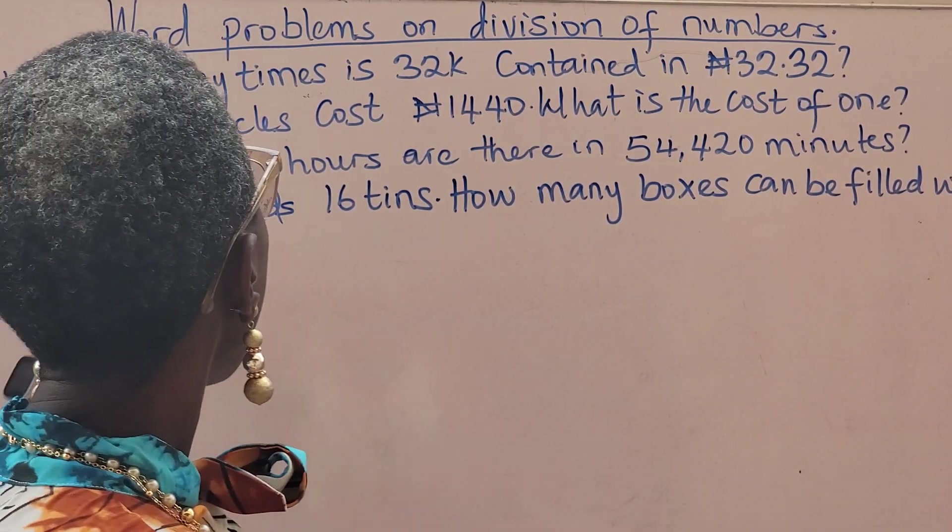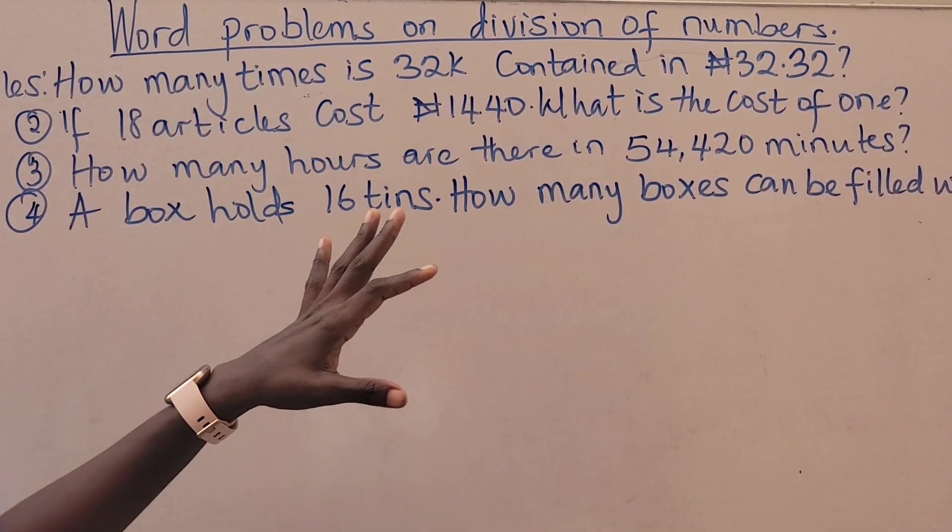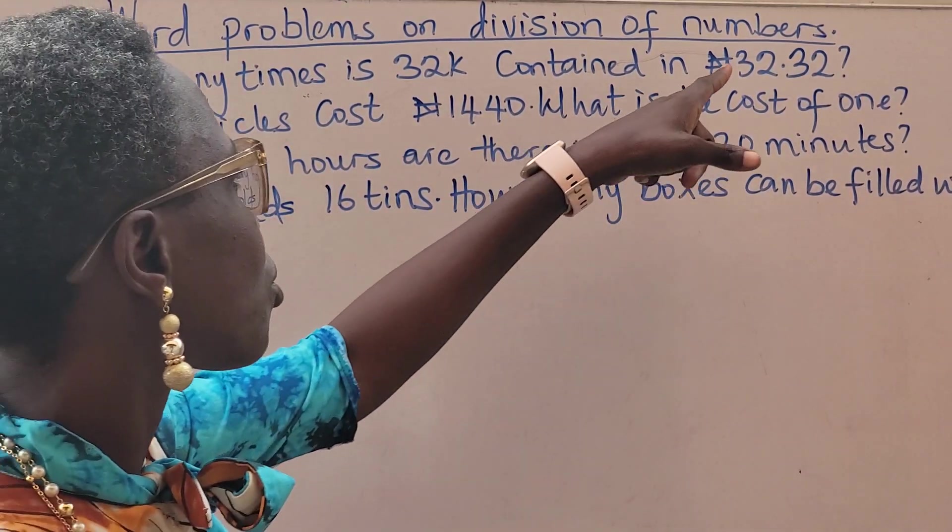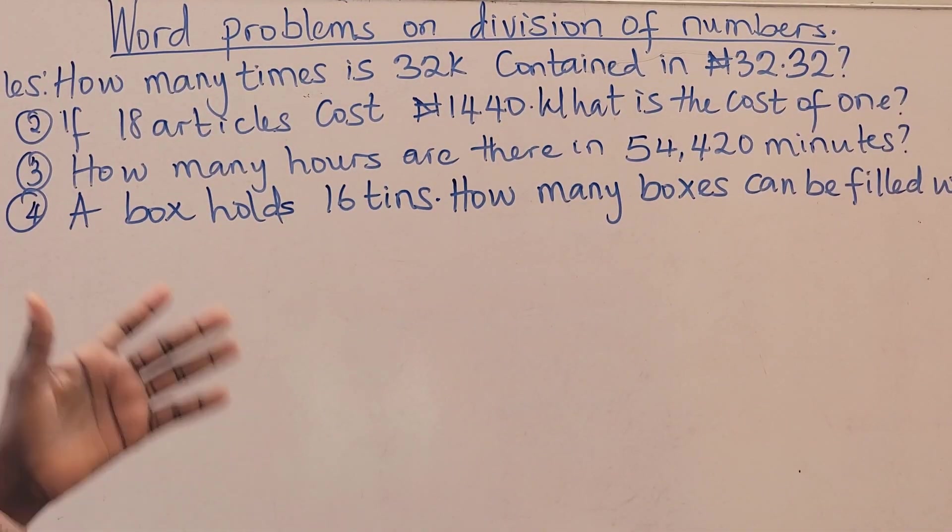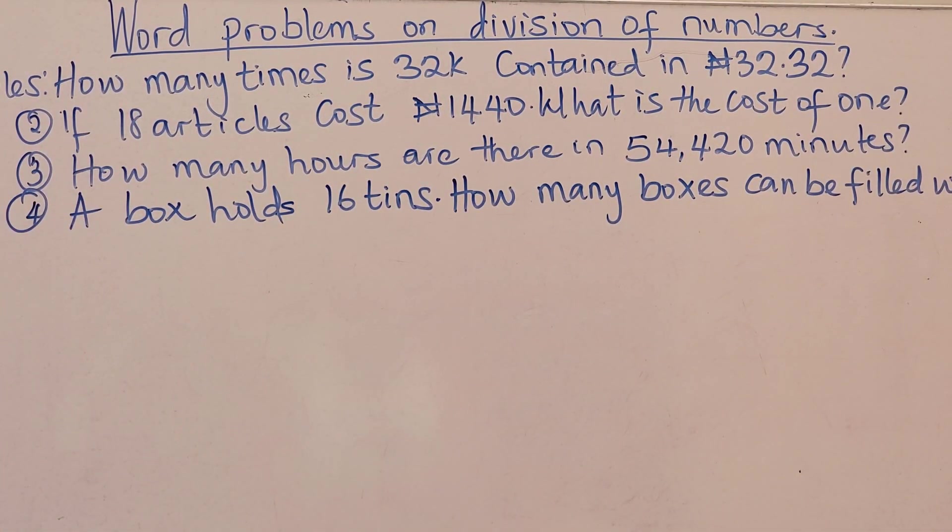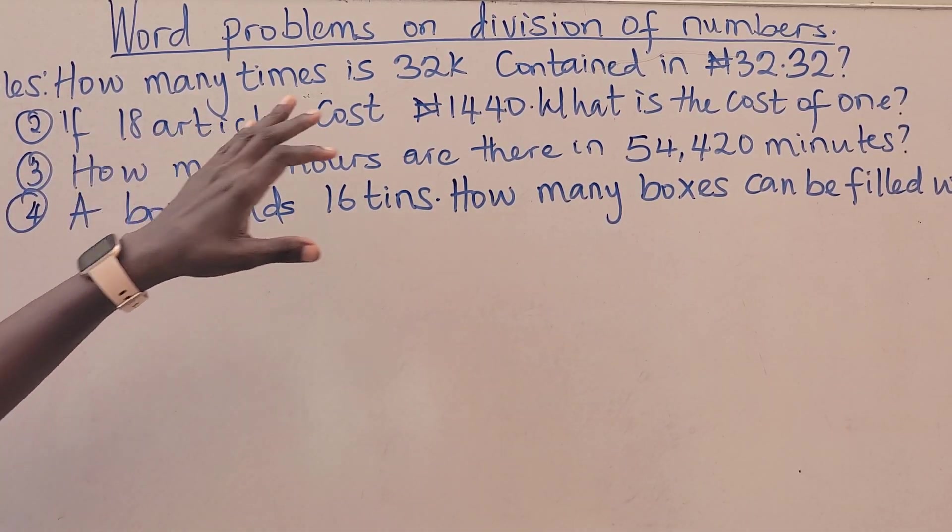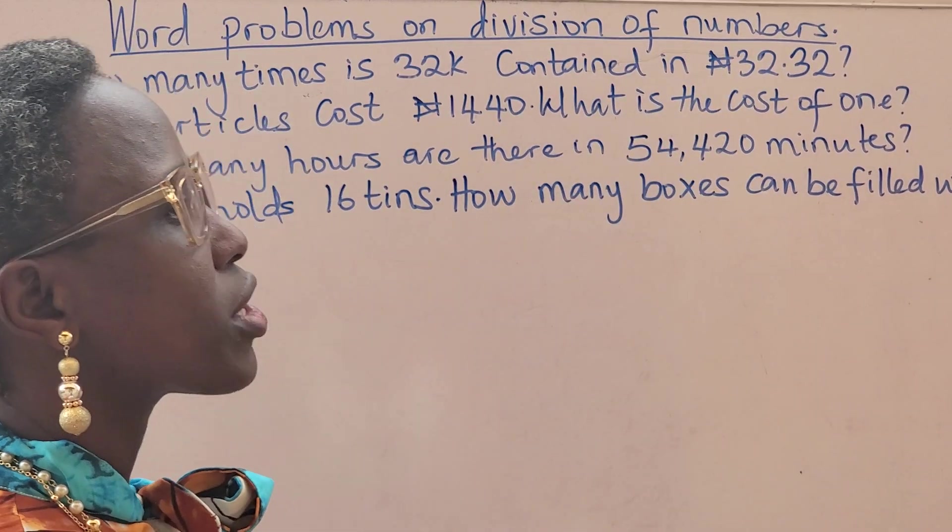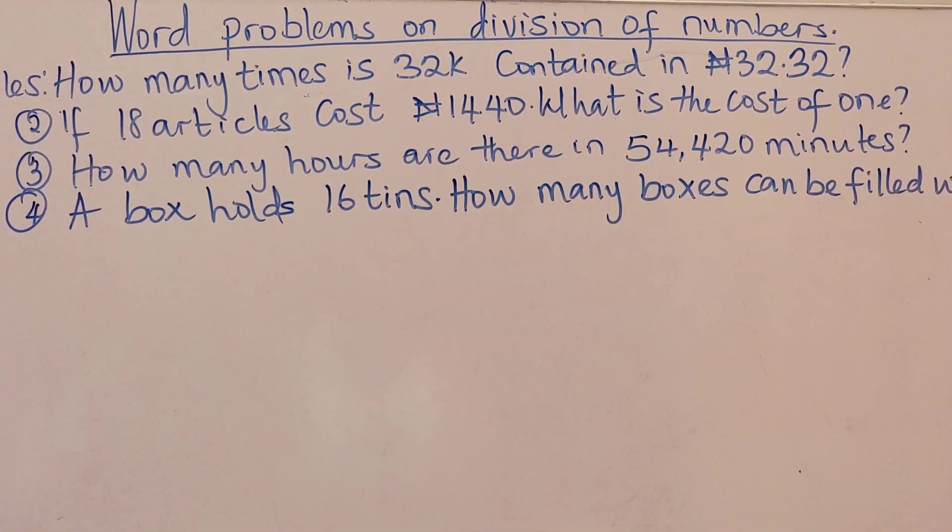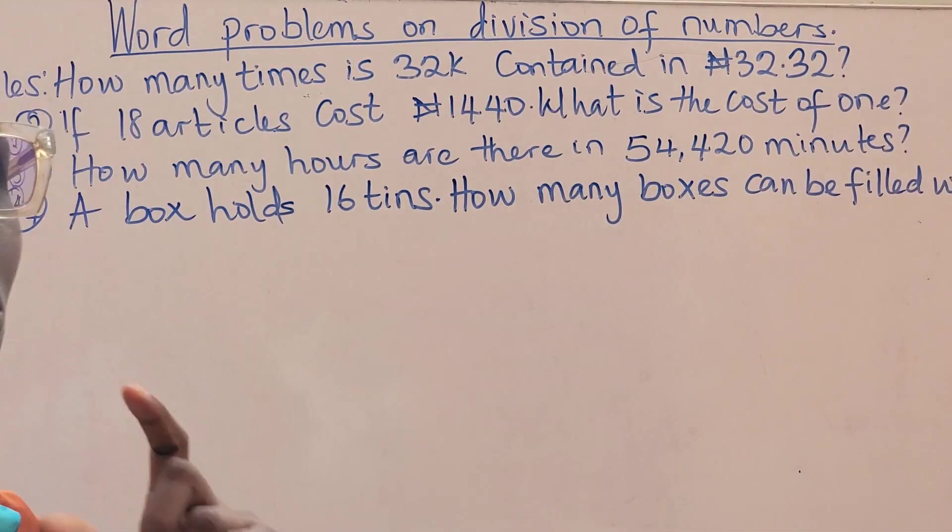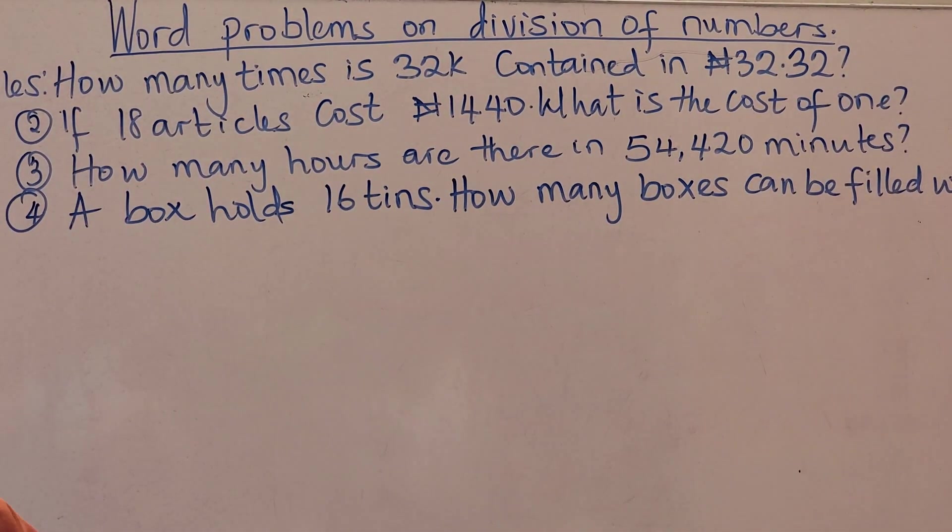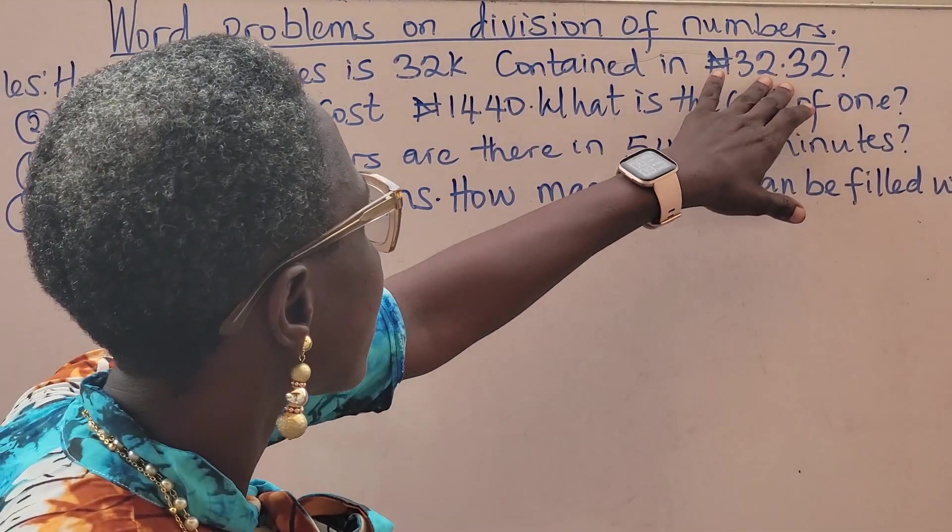How many times is 32 kobo contained in 32 naira? We are going to solve it. All of them are division but it's coming in various dimensions. This is kobo, this is naira. The very first thing we do is to convert both of them to be in the same units. You can't be talking about kobo and naira and using it to divide without converting to be in the same unit.